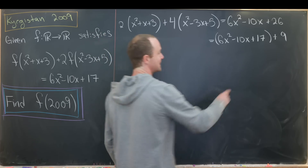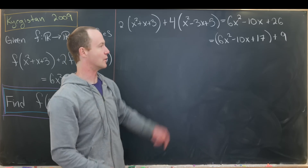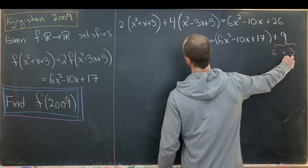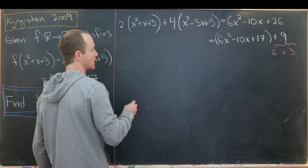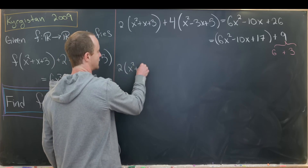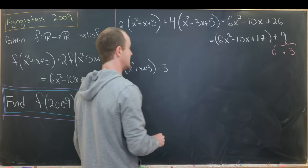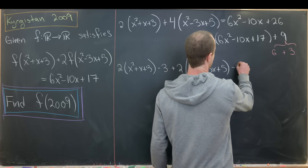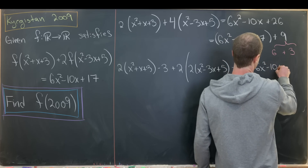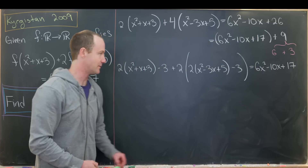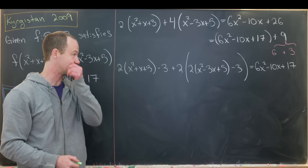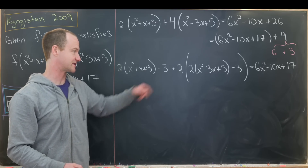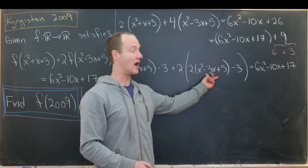That motivates us to split this 9 into two parts. Notice that 9 is the same thing as 6 + 3. We can take the 3 and bring it over to the first polynomial, and the 6 into the second. So we have two times (x² + x + 3) minus 3, plus two times (2x² - 3x + 5) minus 3, equals our polynomial 6x² - 10x + 17. Notice I factored a two out to make it look similar. This is two evaluated at a polynomial minus three, and each term looks pretty similar.